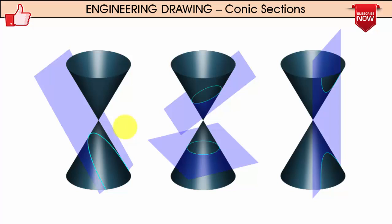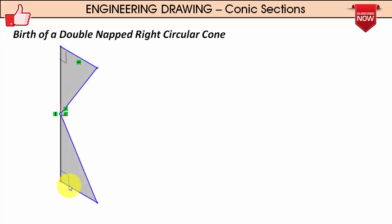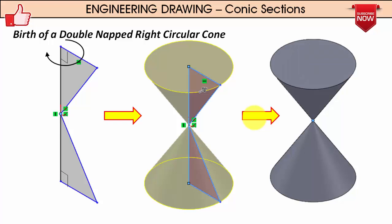To understand how this cone was born, we are going to generate a two-dimensional profile on a plane and then revolve that profile so that it gets converted into a double-napped cone. This profile shows two right-angle triangles joined at their corner. We rotate this entire profile about the vertical line, and what we achieve is called a solid of revolution — more precisely, a double-napped right circular cone.